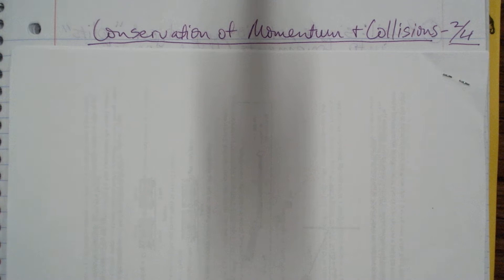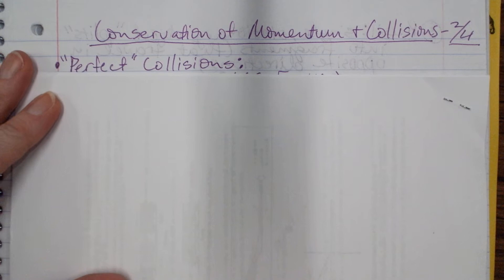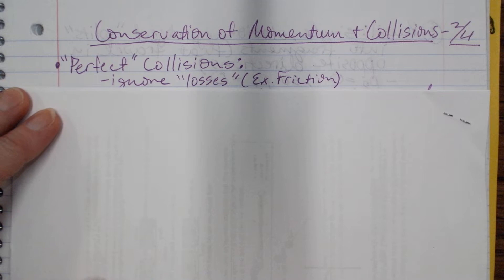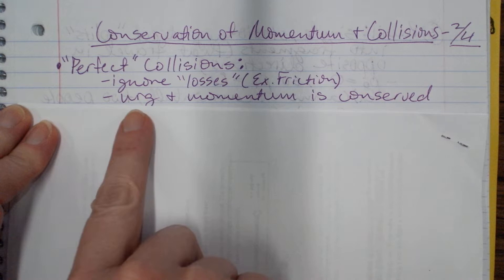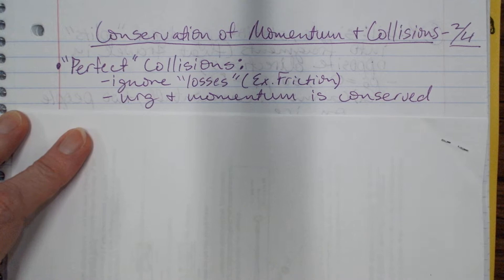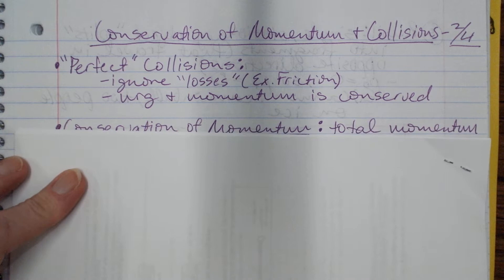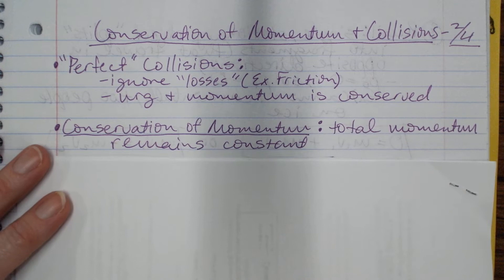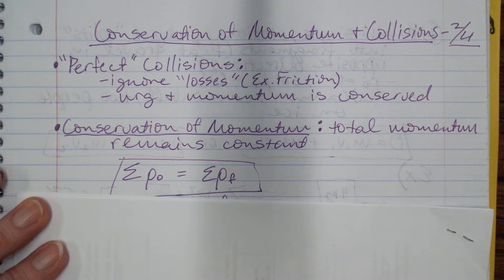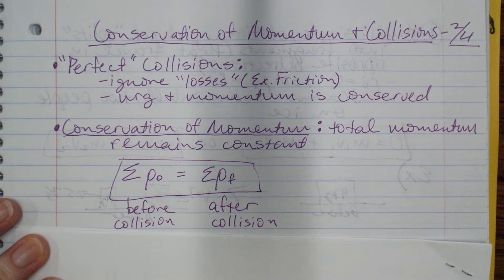Today we're doing conservation of momentum and collisions. A perfect collision is one where we ignore any losses — we ignore friction and ignore changes in any type of energy. So energy and momentum are conserved, meaning they're the same before and after the collision. Any sound or light produced isn't accounted for mathematically. For conservation of momentum, the total momentum remains constant — the momentum before the collision and after the collision are exactly the same.